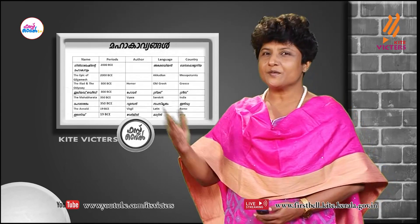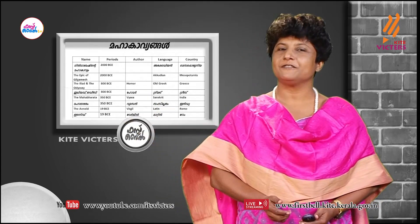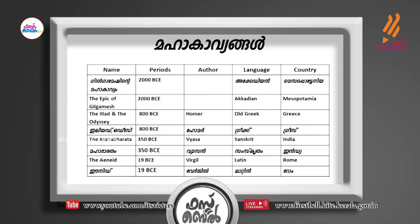Here is a list of epics. Can you identify any of these epics? The first one is very much familiar to you: The Epic of Gilgamesh. As you all know, it's written in Akkadian language and it's from Mesopotamia.